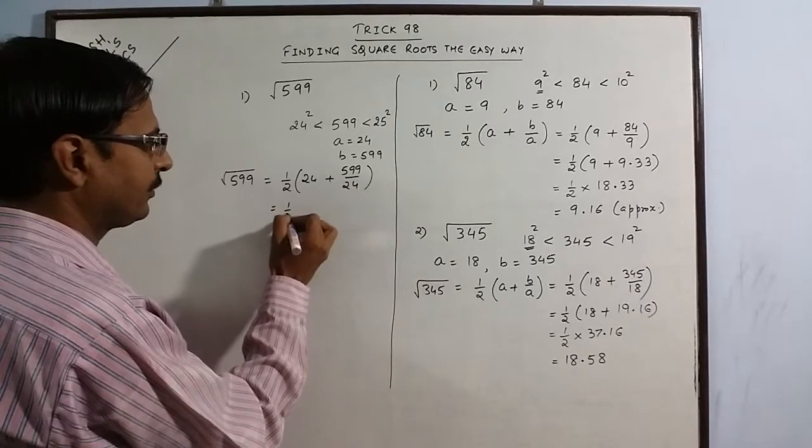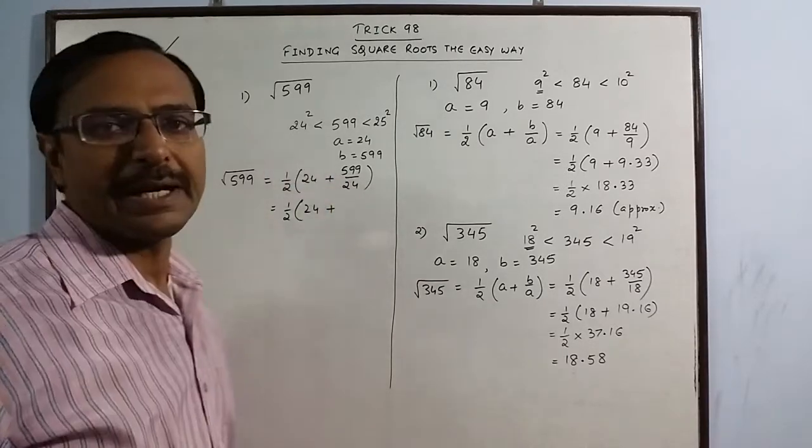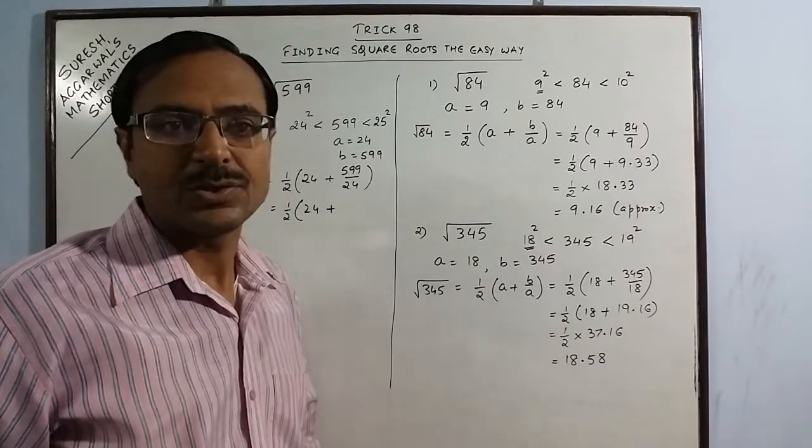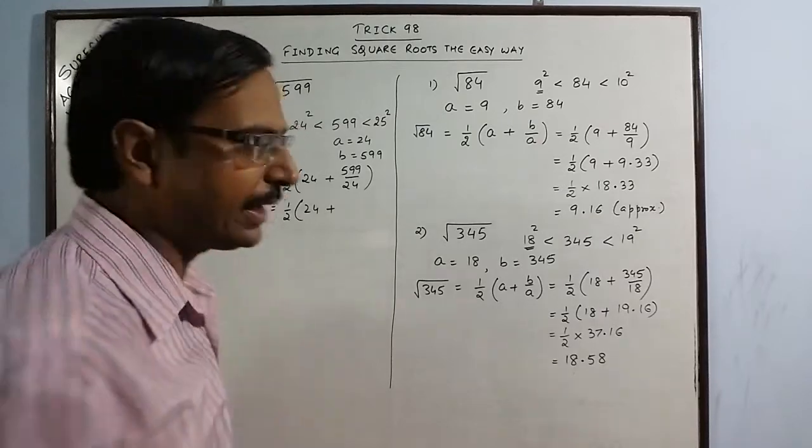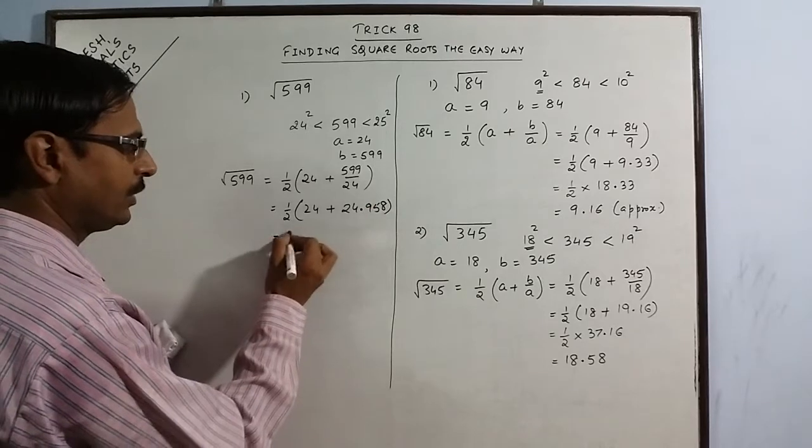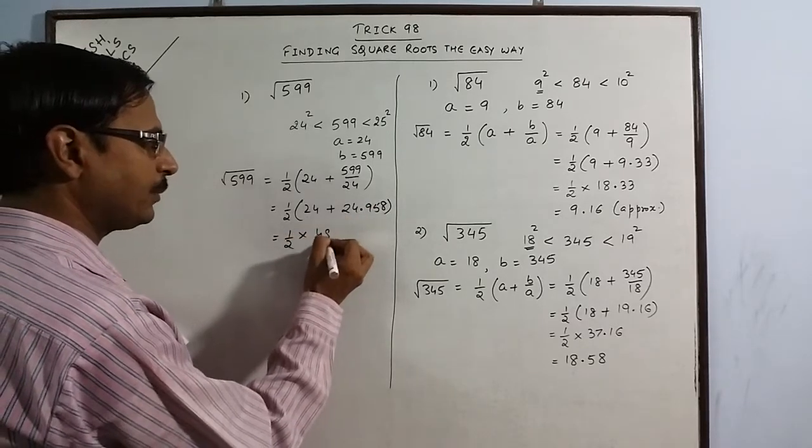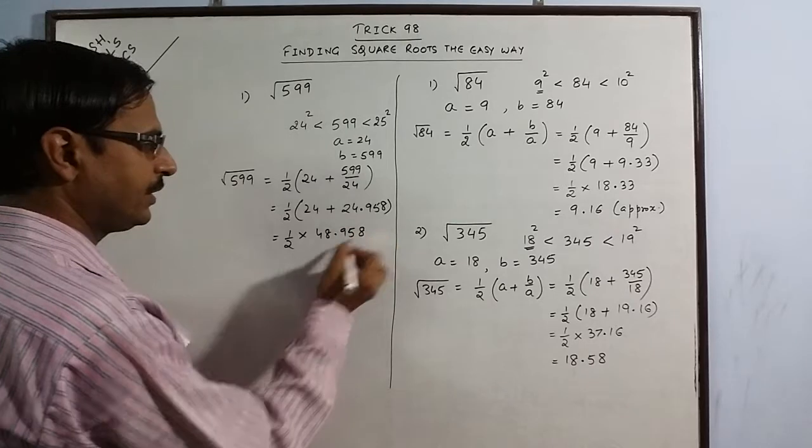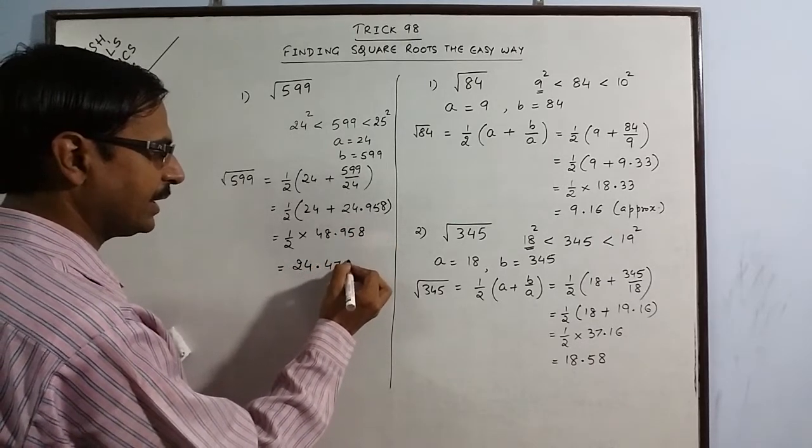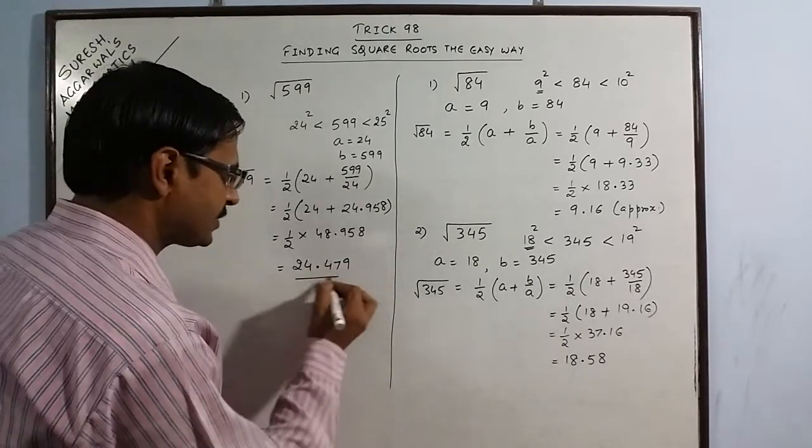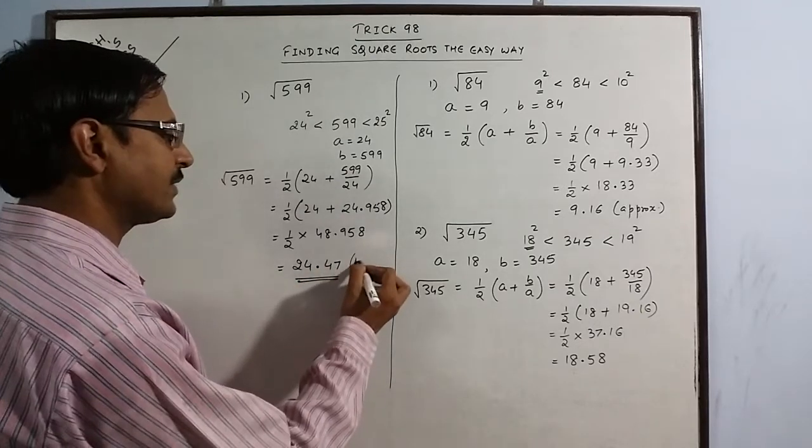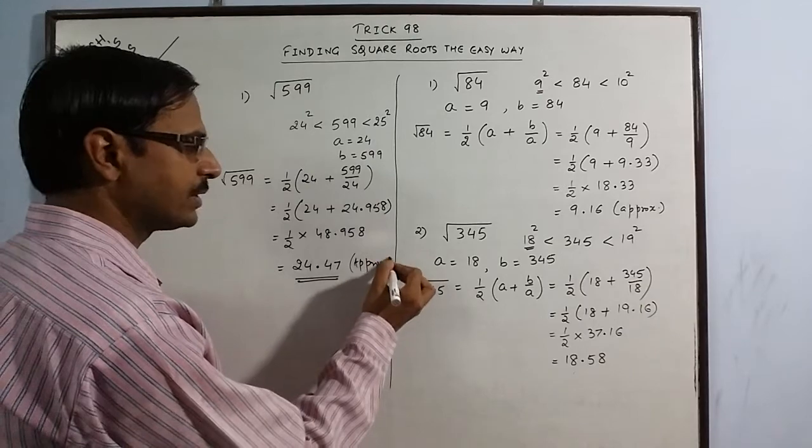So half of, now again 599 upon 24, this is the only calculation which you need to do in rough work. So I have solved that for you, it is 24.958. And now if you add them, this is 48.958 and when you divide it by 2, this will be 24.479. So the approximate square root up to 2 digits, you can calculate, this is the approximate value of the square root 24.47.